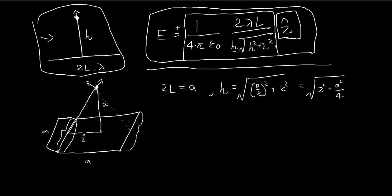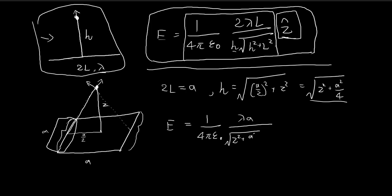Now we substitute directly into the formula. The constants stay the same. 2L becomes a, so we get a·lambda. For H we use √(z² + a²/4). For H² in the denominator we have z² + a²/4, and then plus L², where L = a/2, so plus (a/2)² = a²/4.